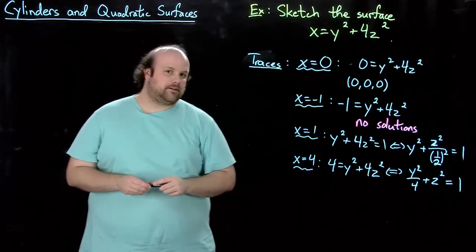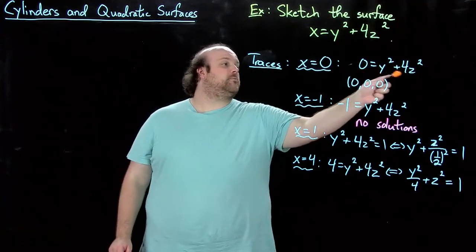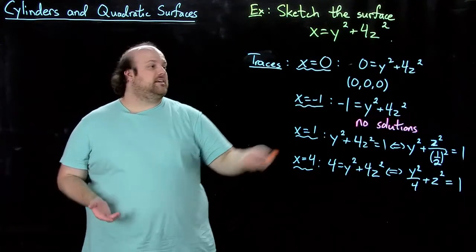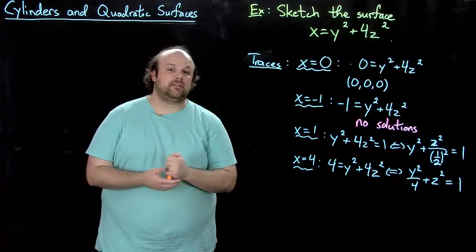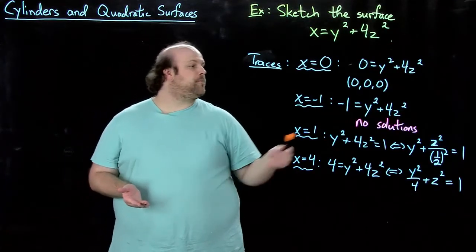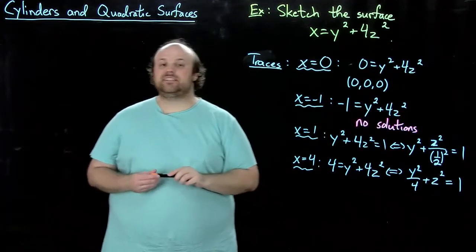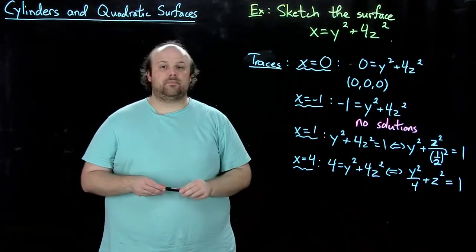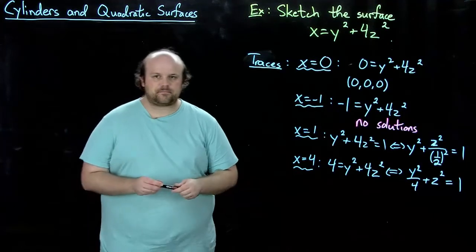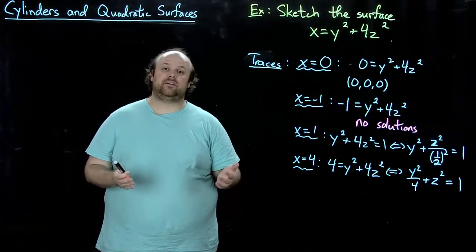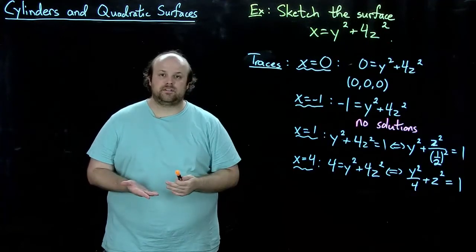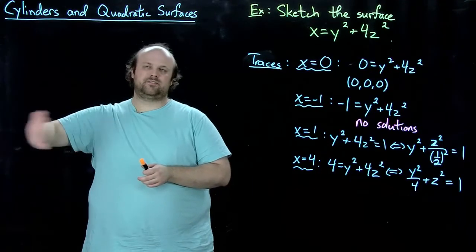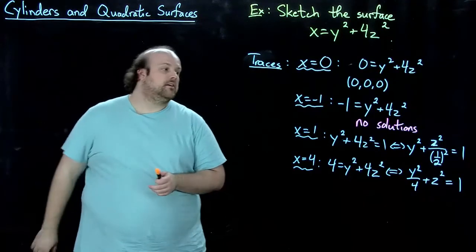So, let's look at x equals zero. Well, then we get this equation zero equals y squared plus 4z squared. Well, the only thing that can possibly solve that is the origin, which is a point. What about x equals negative one? Well, since y squared and 4z squared are both positive, then there's no way two positive things can add up to give a negative number. So, there's no solution in this case. And that's actually going to be true for any negative value of x. That will never be able to be solved. So, in other words, what that means is there's no part of the surface on sort of the negative side of the x-axis.